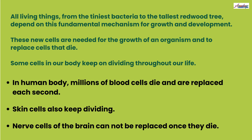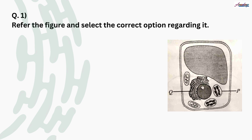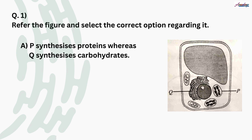Now let's solve some questions based on what we have learned about the cell. Question number one: refer to the given figure and select the correct option. From the figure, it is clear that Q is rough endoplasmic reticulum and P is chloroplast. We know chloroplasts are only present in plant cells. Option A says P synthesizes protein whereas Q synthesizes carbohydrate. We know that P takes part in photosynthesis and Q (rough endoplasmic reticulum) is associated with protein synthesis. So option A is wrong.